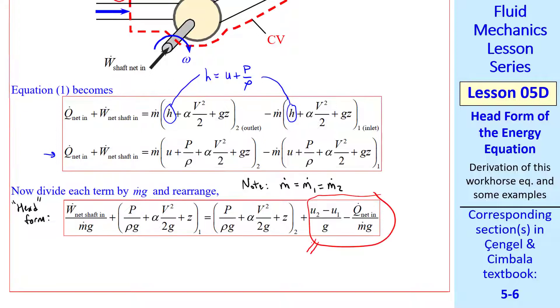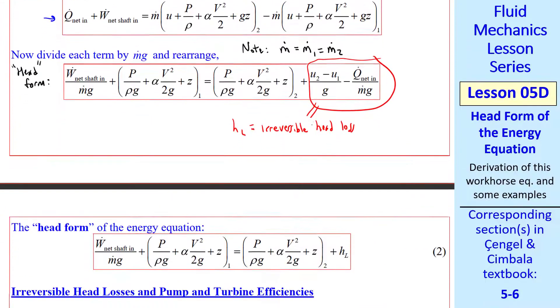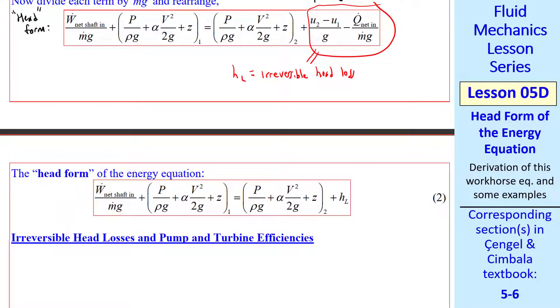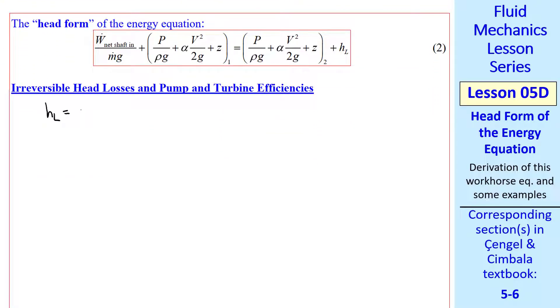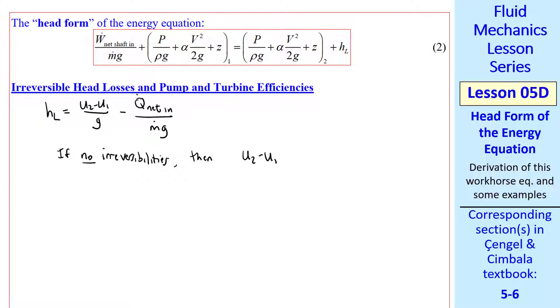But let's do some further manipulation. We define this grouping of terms as HL, the irreversible head loss. And then the final form of this equation becomes what we'll call the head form of the energy equation, which I call equation 2. But let's do some further analysis and manipulation of this equation. I want to talk briefly about this head loss term. HL is a length or a head. If there were no irreversibilities, like friction, or heat transfer through finite temperature differences, then the change in internal energy of the fluid would exactly equal the rate of heat transfer into the fluid divided by mass flow rate. Dividing both terms by g, we can see immediately that that means that HL equals zero. In other words, no irreversible head losses.